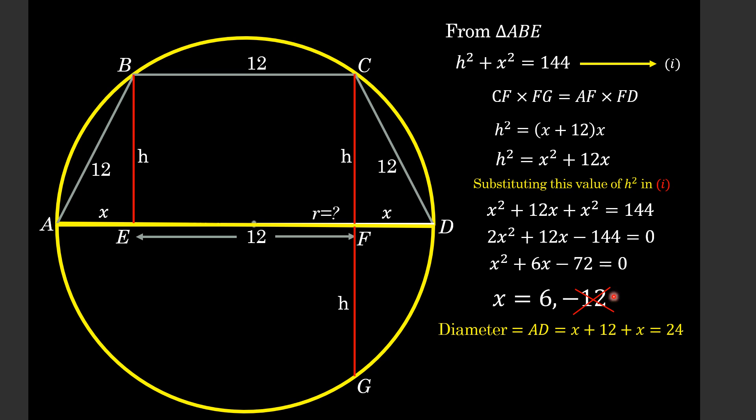And substituting here the value of x, we will get 6 + 12 + 6, that is equal to 24. And now it is very easy to find the radius because radius is half of diameter and that is 12 units.